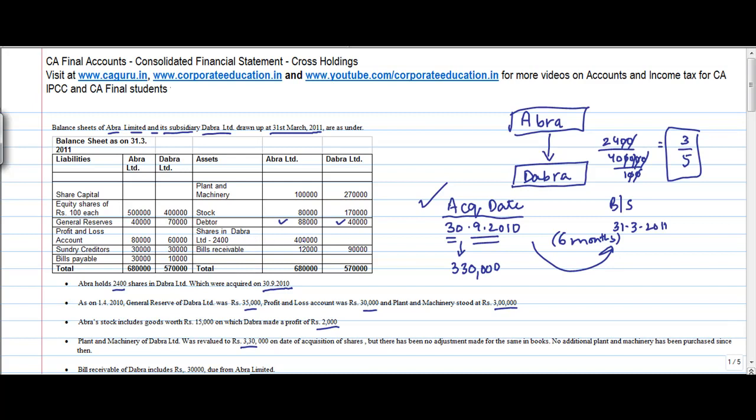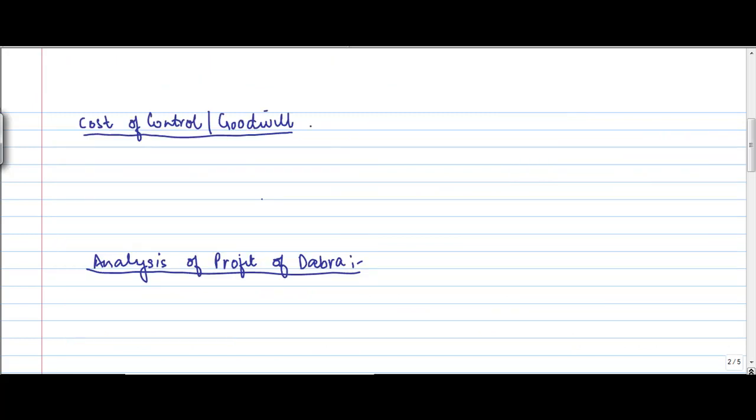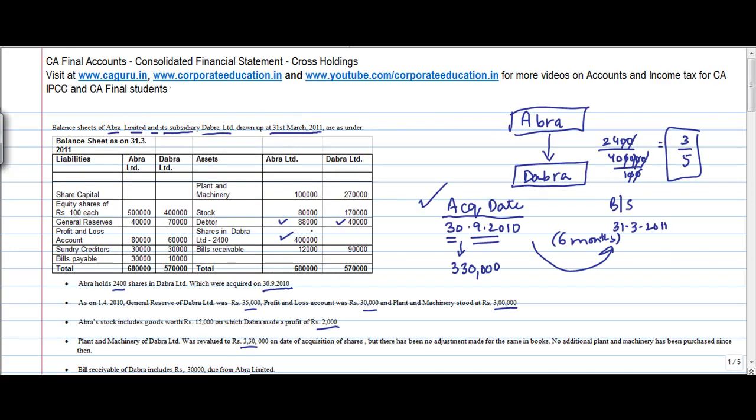Shares in Dabra, 4,00,000. Now this amount which is investment, where does it go? It goes to the cost of control. So cost of control, the investment value or the amount I have paid for these shares is 4,00,000. Okay. So I have moved it from here and I have put it there. So one removal, one addition.